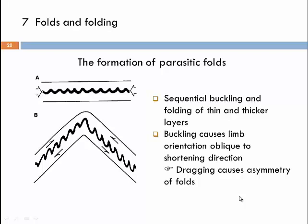How do such folds form? We see here a competent layer interlayered with less competent layers, and this sequence of layers is undergoing horizontal shortening in the ductile field. This would lead to the formation of symmetric folds, as long as folding is resulting from layer-parallel shortening. These folds would be symmetric with uniform fold width and amplitude — upright folds with vertical axial surfaces, with regular synforms and antiforms.